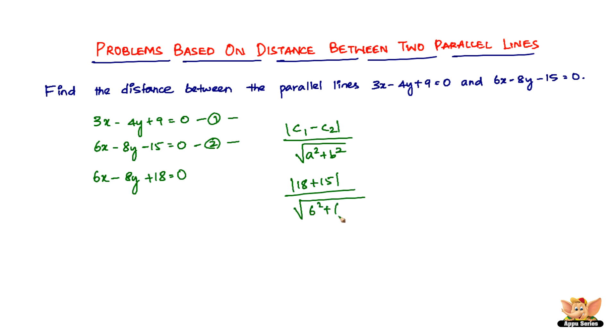That is 6 squared plus negative 8 squared, which is mod of 33 divided by... 6 squared is 36, negative 8 squared is 64, so 36 plus 64 is 100. Square root of 100 gives us 33 divided by 10.